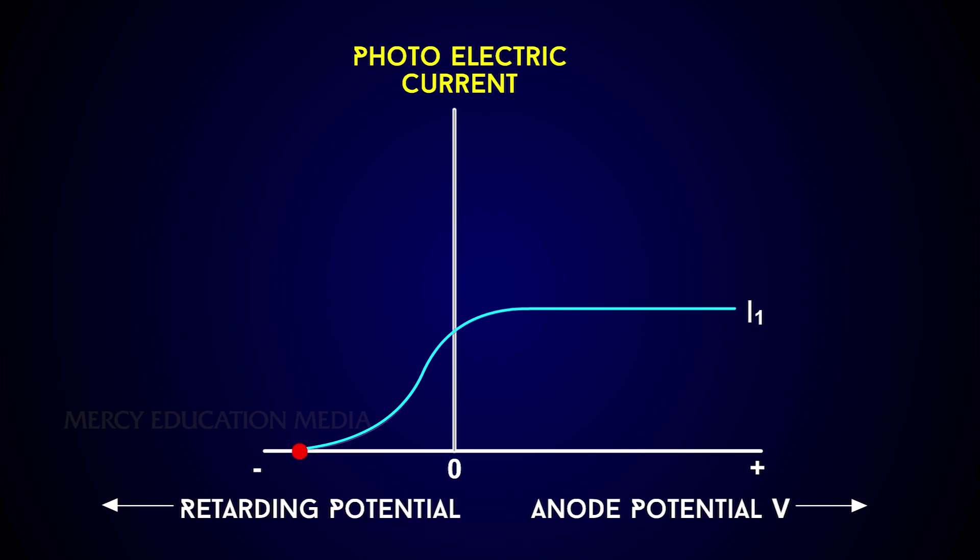Thus, the minimum negative, that is retarding potential, given to the anode for which the photoelectric current becomes zero is called the cutoff or stopping potential.